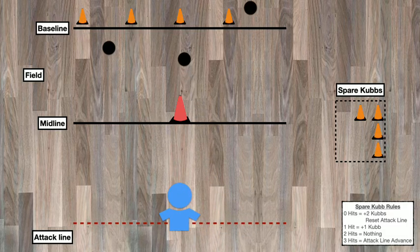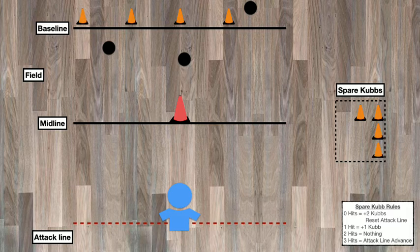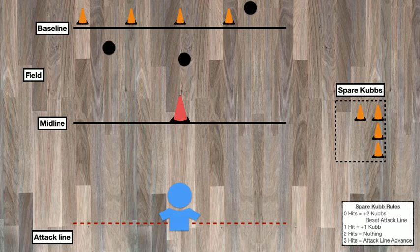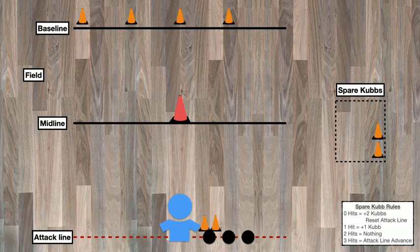Unfortunately, as you notice, this player misses with all three. So now, once again, a few things are going to happen. We are going to collect, you'll see from zero hits, we're going to collect two Kubbs from the side. But now, it does apply where we need to reset the attack line, since we miss with every single one. So you'll notice that once everything gets collected, the attack line will shift back as well.